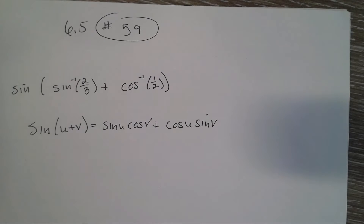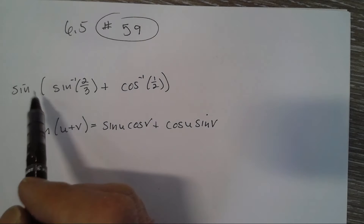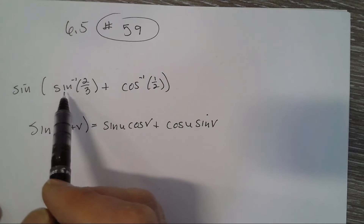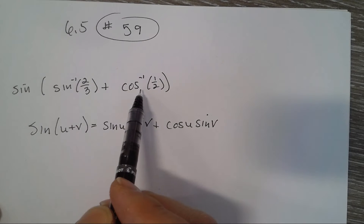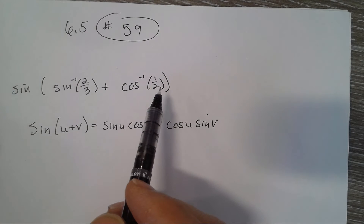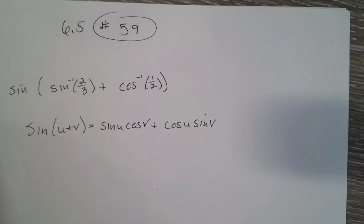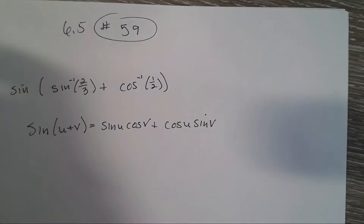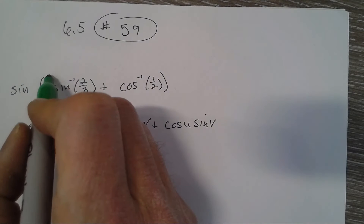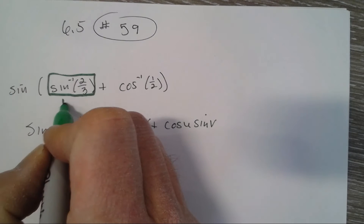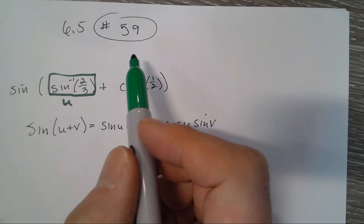Section 6.5, number 59. The instructions are to find the exact value of the given expression. We have the sine of inverse sine of two-thirds plus inverse cosine of one-half. We need to recognize that this is the sine of u plus v, where this is u and this is v.